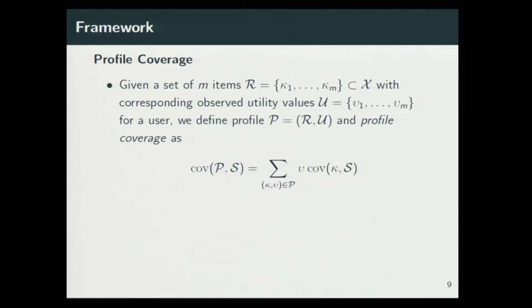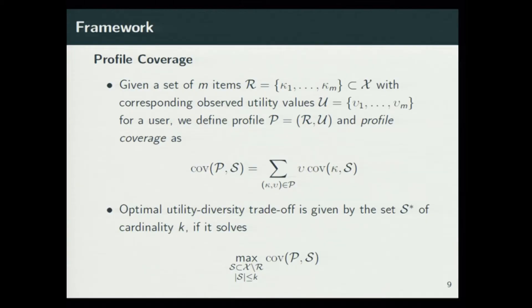The profile defines a user's interest, and we frame our diversification problem as covering the user's interest. A higher value of profile coverage indicates that the set S covers a larger spectrum of the user's interest. In that sense, a set S* will have an optimal utility-diversity tradeoff if it solves this maximization problem. We have a cardinality constraint because we are interested only in the top-K recommendations.